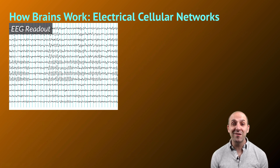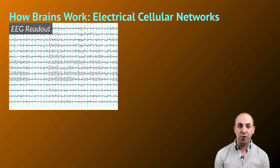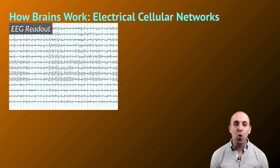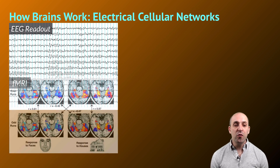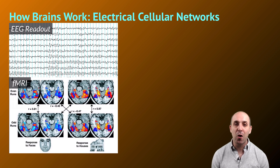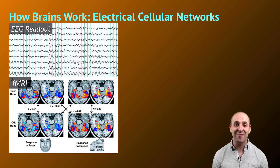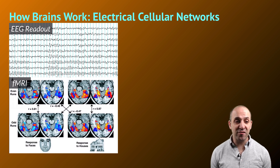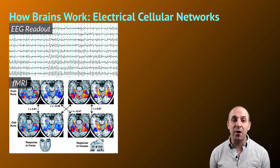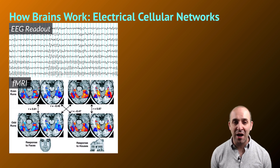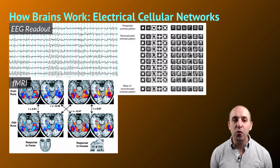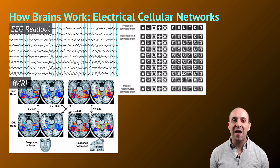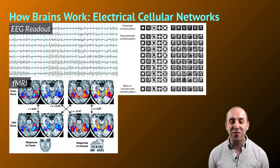We can see this in things like electroencephalograms, where we get patterns of electrical signals from the brain. Recently, through things like functional MRI, we've been able to put people into MRI machines and actually see changes in circulation patterns happening in their brains in real time as they think. You can see in this graphic that the regions of the brain activated in response to being shown a face are very different from those activated in response to being shown a house.